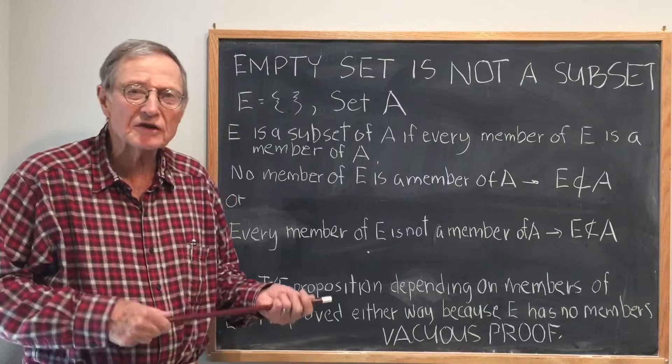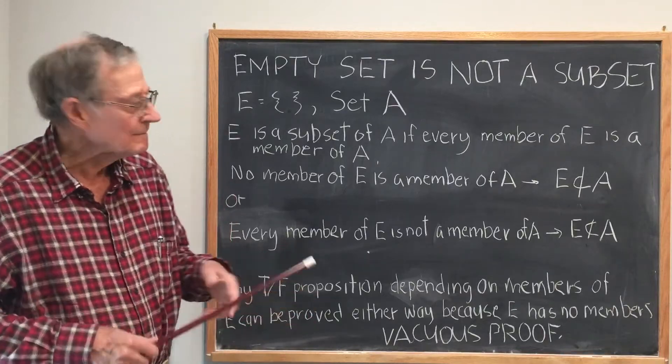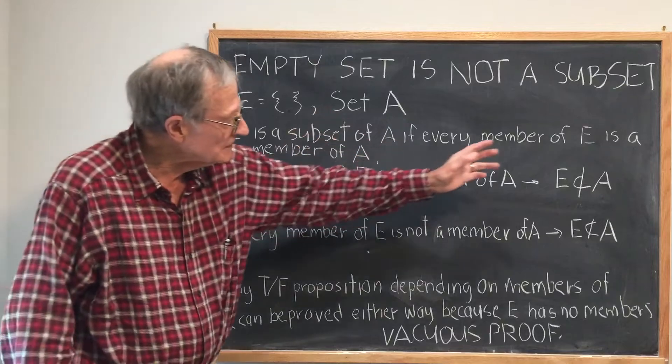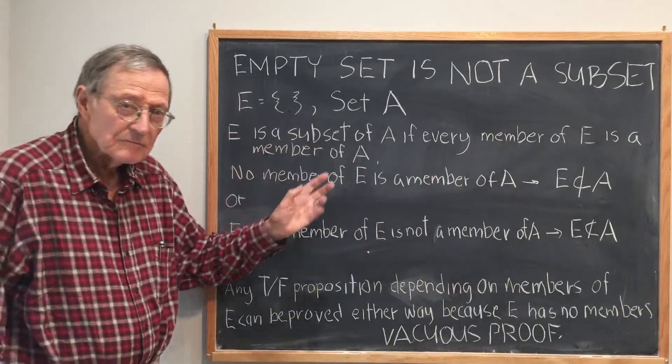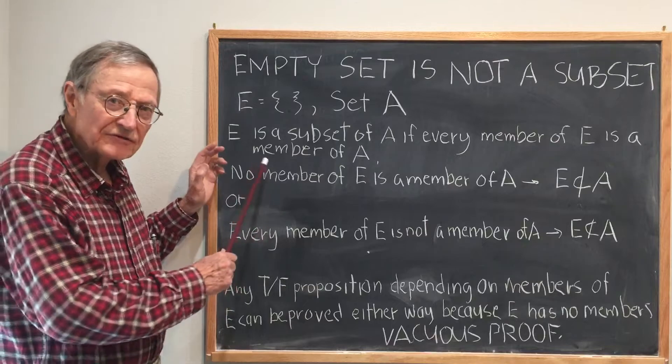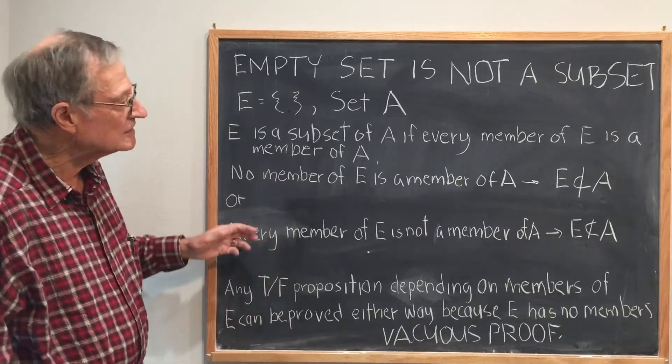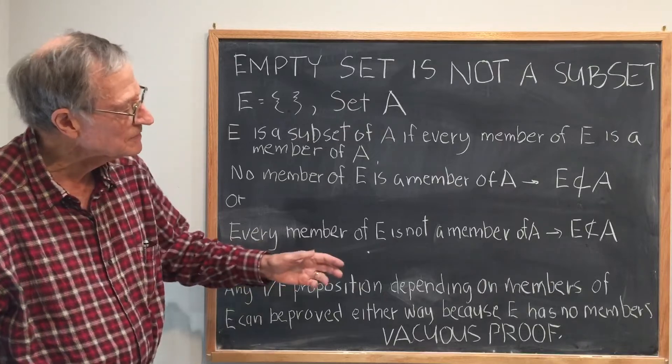Actually, I really don't understand why the question even comes up, because by definition, E is a subset of A if every member of E is a member of A. But E has no members, so I don't see why the definition would even be applied to come up with an inconclusive proof that E is a subset of A.